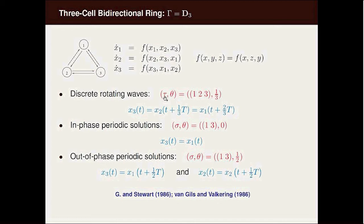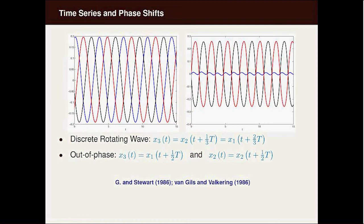You can have in-phase solutions where nodes one and three are synchronous, or you can have out-of-phase solutions where one and three are out of phase by half a period. But then x2 must be out of phase with itself by half a period, that is, x2 will have twice the frequency.